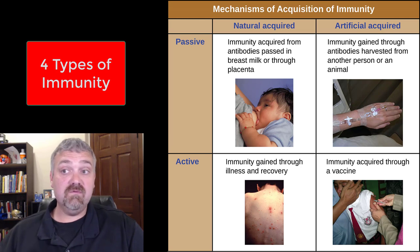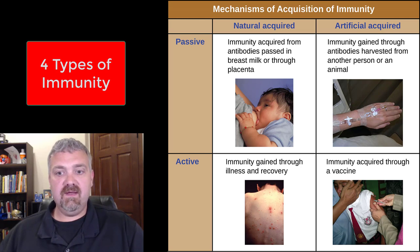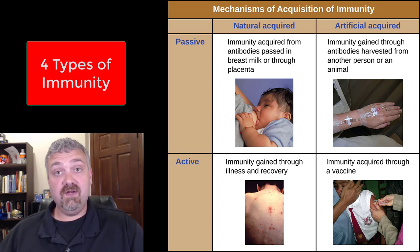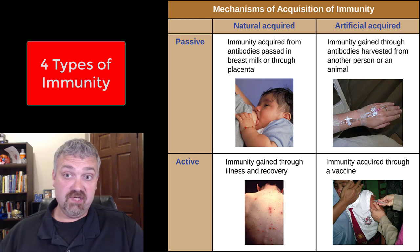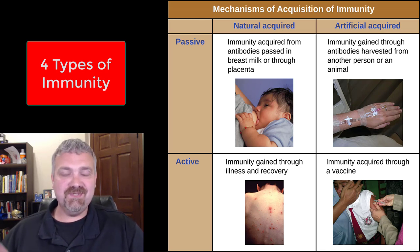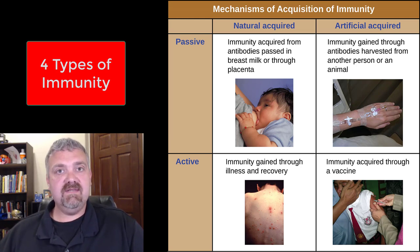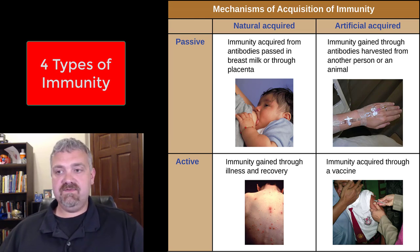First we have natural versus artificially acquired. Natural acquired is something that would have happened as long as we've been a species. Artificially acquired is something that is done to you — it's a medical intervention. Natural versus artificial doesn't mean one's good and one's bad, but that's what the terms are.